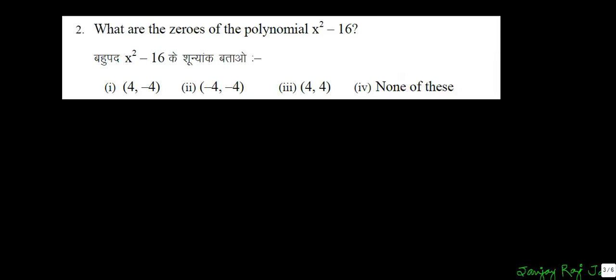This is a question about polynomials. The given polynomial is x squared minus 16, and we need to find the zeros of this polynomial. Zeros of a polynomial are those values of x which make the polynomial equal to 0 — such values of x that will make this polynomial 0 are the zeros of this polynomial.